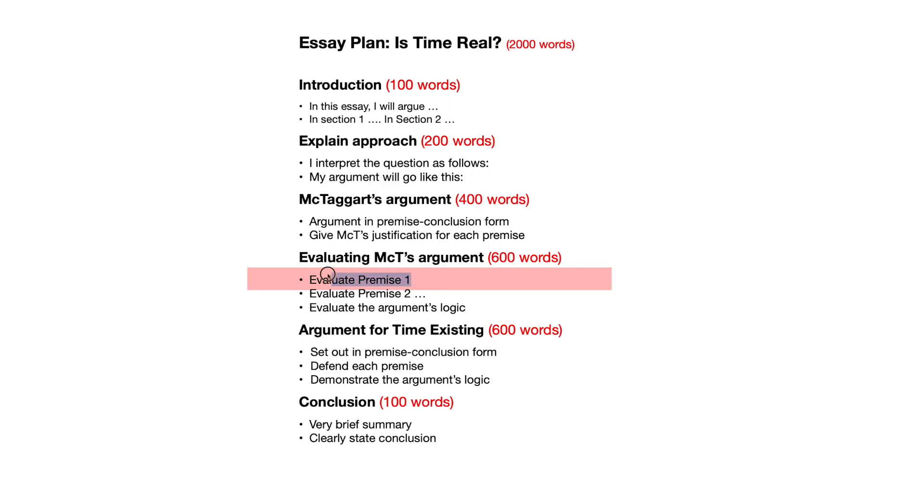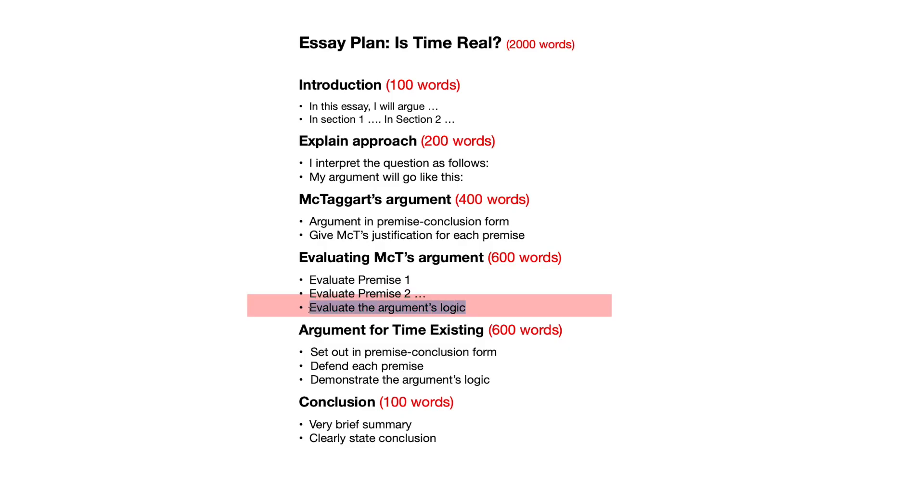Here I just write a paragraph evaluating premise one of this argument. Here I just write a paragraph saying whether this argument has a logically valid form or not. That's all I need to do for each bullet point. So by keeping each bullet point separate: A, you keep the essay really readable — it's really easy to follow and really well structured. And B, it makes it easy for you to write because you only have one thing to do at each point.